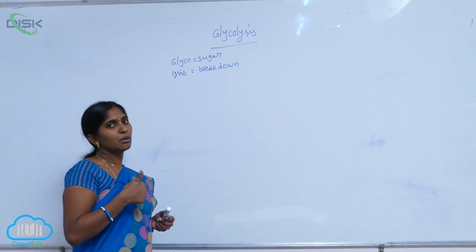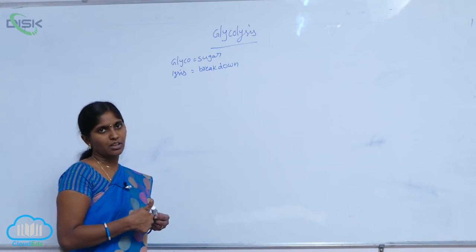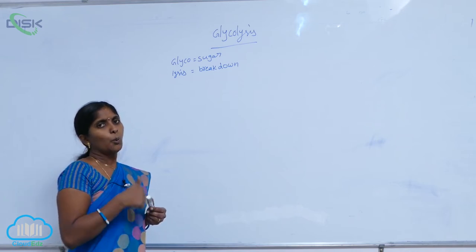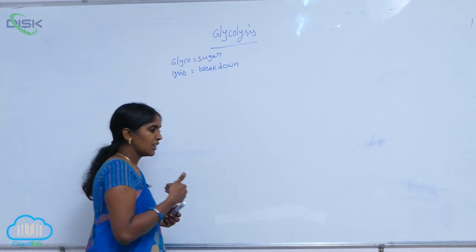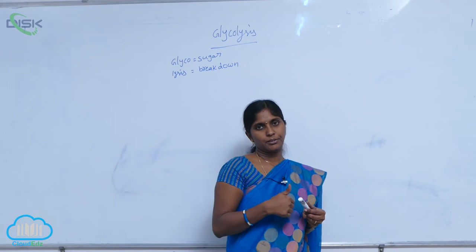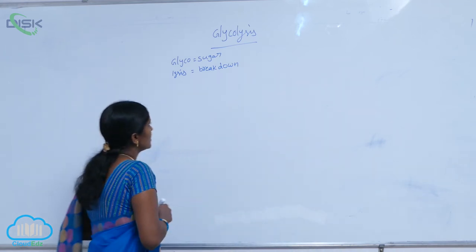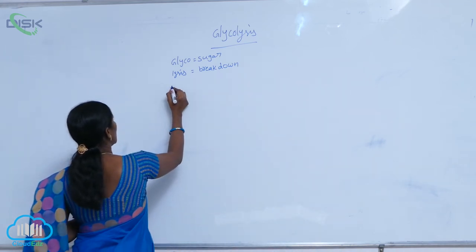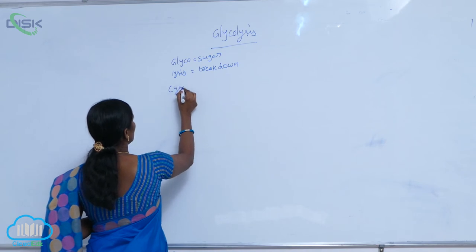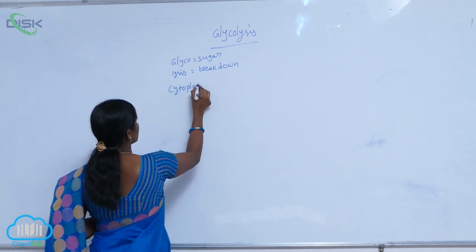Glycolysis is a metabolic pathway included in respiration. The glycolysis is carried out in the cytoplasm of the cell.